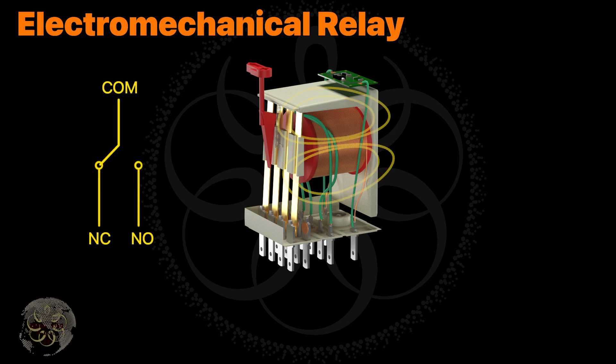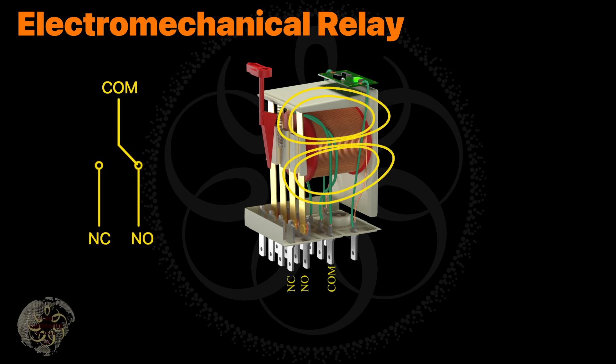When current flows through the coil, it creates a magnetic field that pulls the armature, changing the state of the contacts. The relay remains in this state as long as the current continues to flow.